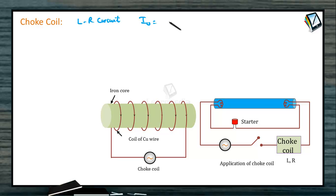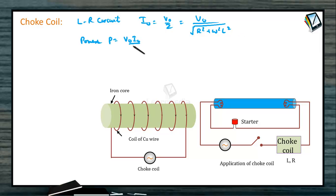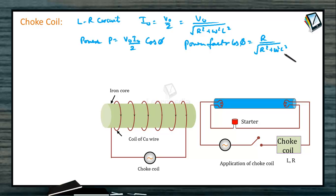The amplitude of current I₀ = V₀/Z = V₀ / √(R² + ω²L²). Average power = (V₀I₀/2)·cos φ. The power factor cos φ = R / √(R² + ω²L²). The inductance L of the choke coil is quite large on account of its large number of turns and high permeability of the iron core, while resistance R is small. So the power factor cos φ tends to 0, and therefore the power absorbed by the coil is extremely small.